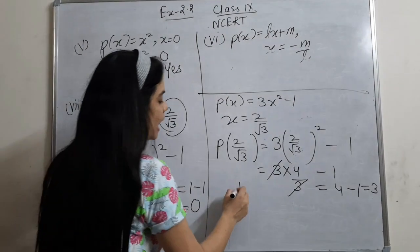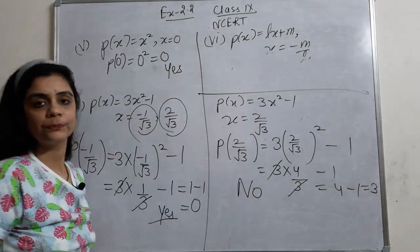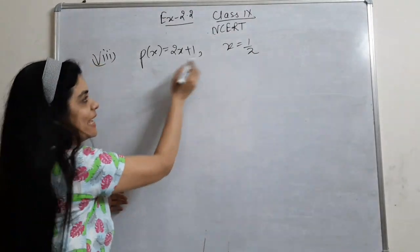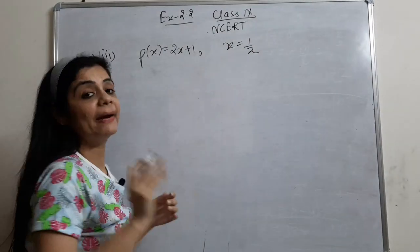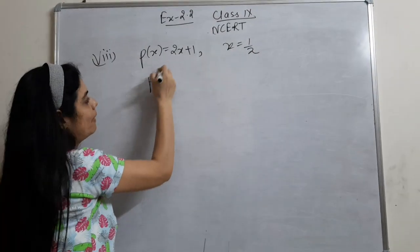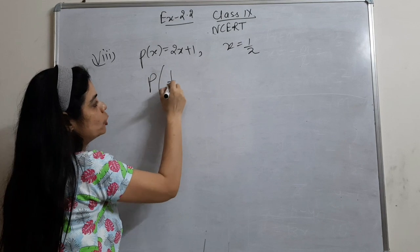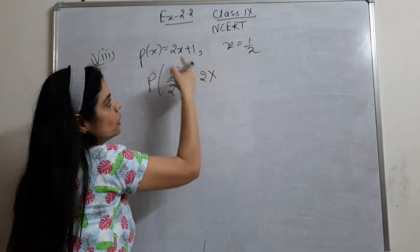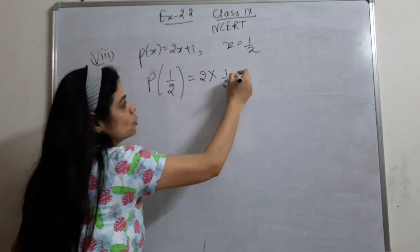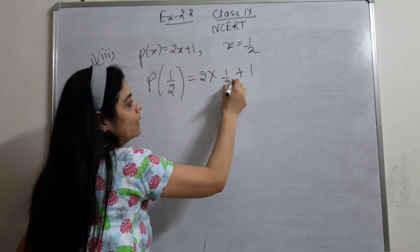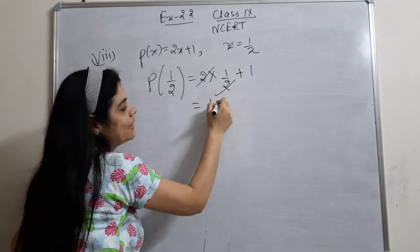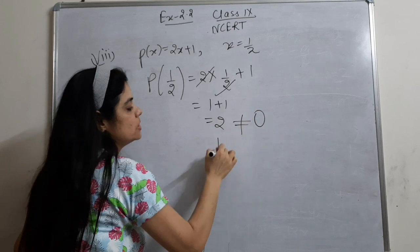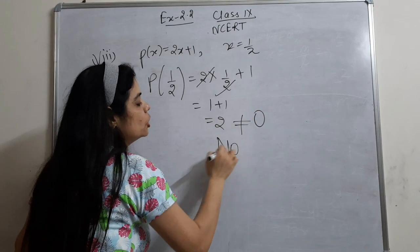Here comes the last part of this question. We have to check x = 1/2 in p(x) = 2x + 1. Put x = 1/2: 2 into 1/2 plus 1, the 2s cancel, giving 1 plus 1 which is 2. That means it is not equal to 0, so the answer is no.